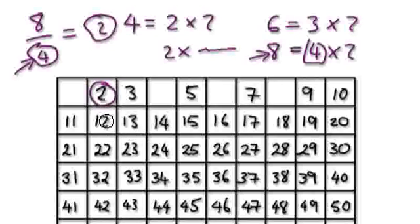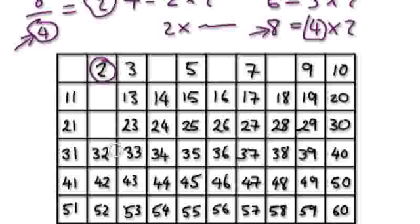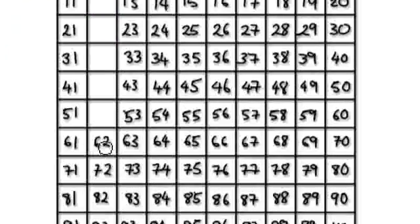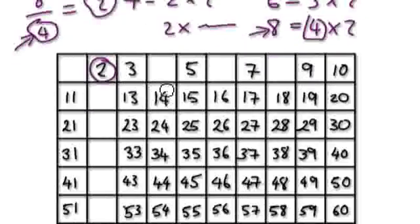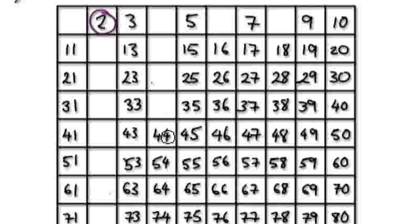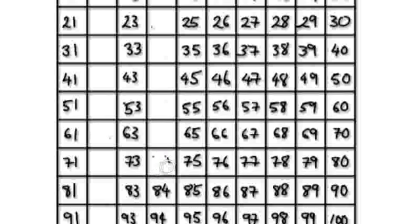For example, 12 can be written as 6 times 2, so 12 is not a prime. 22 can be seen as 11 times 2. And 42 you can visualize as 21 times 2. So all the even ones would disappear because you can always write them as 2 times something. Because 2 is already a prime, we can get rid of all the even numbers — you can just divide them all by 2 to get another whole number.